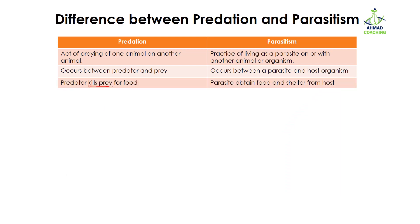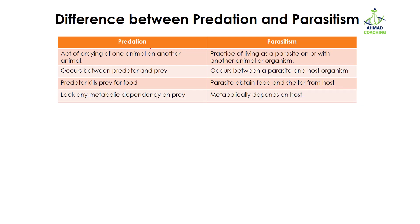The predators kill the prey for food. In case of parasitism, the parasites obtain food as well as shelter from the host. They are not only getting food from the host, but the host also acts as their home — they protect themselves by living within or on the host.